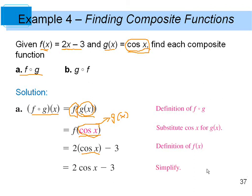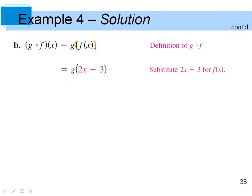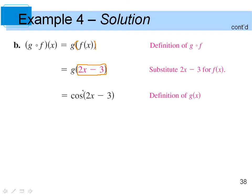Simplified: two times the cosine of x minus three — that is f of g of x. Now let's look at g of f of x. We start with our f of x function and work outward toward g. Our f of x function was 2x minus 3, so we substitute that in. Now g is equal to the cosine of my input, and our input after evaluating f of x is 2x minus 3. That goes into the g function — the cosine of x, where our new x is 2x minus 3.